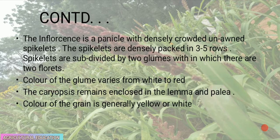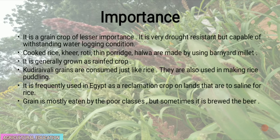The inflorescence is a panicle with densely crowded, unawned spikelets. The spikelets are densely packed in three to five rows, subdivided by two glumes, within which there are two florets. Color of the glume varies from white to red. The caryopsis remains enclosed in the lemma and palea. Color of the grain is generally yellow or white.